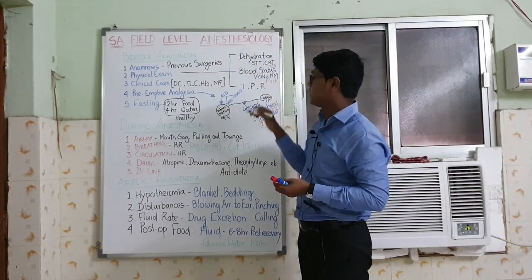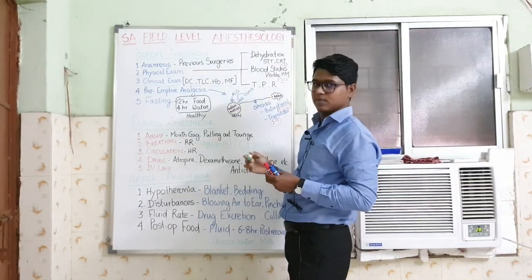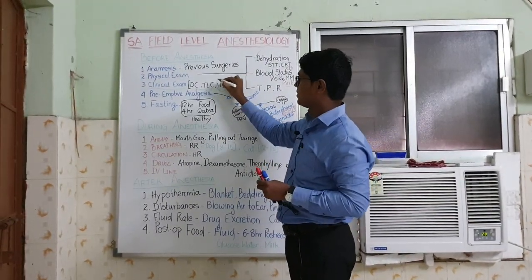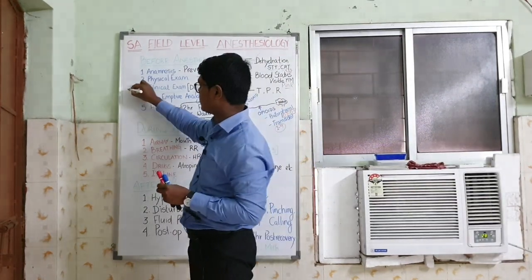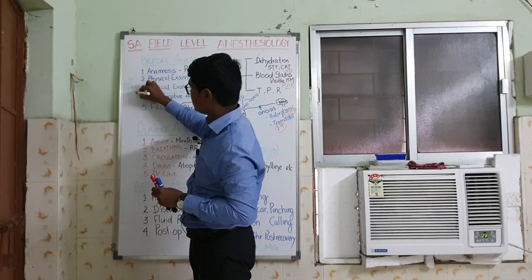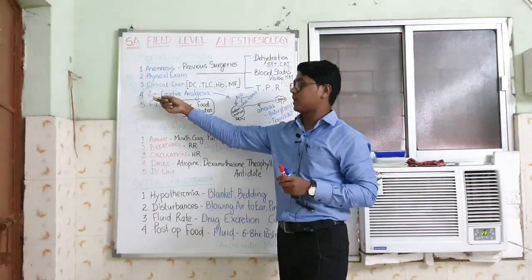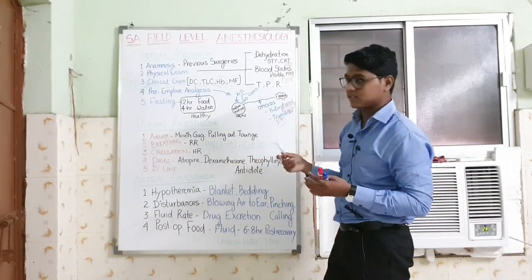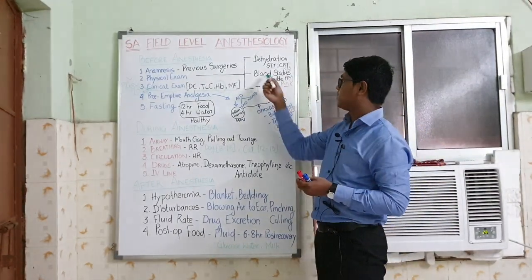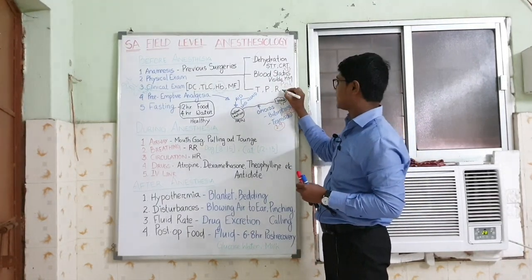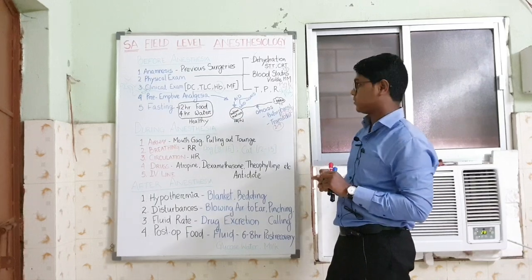Check blood status through clinical examination — DC, TLC, hemoglobin. In field conditions where laboratory access is limited, you can visualize the mucous membrane to get an approximate idea of blood status. The mucous membrane should ideally be pink or slightly pink. If the color is pale, the animal is anemic. Do not prefer major surgeries in anemic animals.